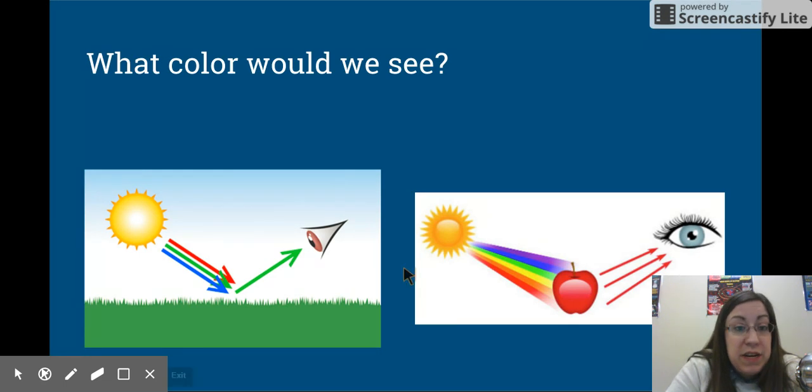So, let's look at these two pictures right here. If you're looking at this picture right here, the sun is going to reflect all of its white light down onto the grass. Transmits it there. All the colors are absorbed, except for green. And green is going to bounce back to our eye, and we're going to see green.